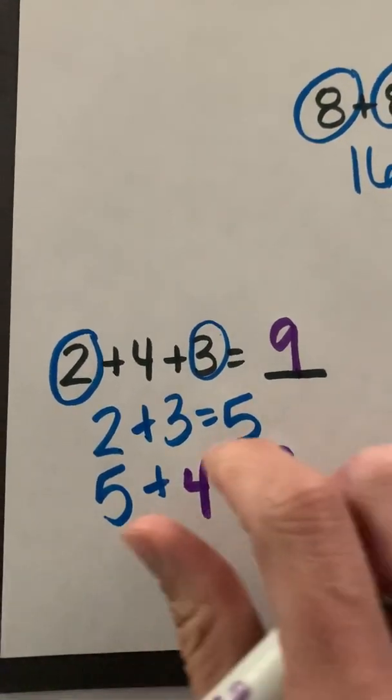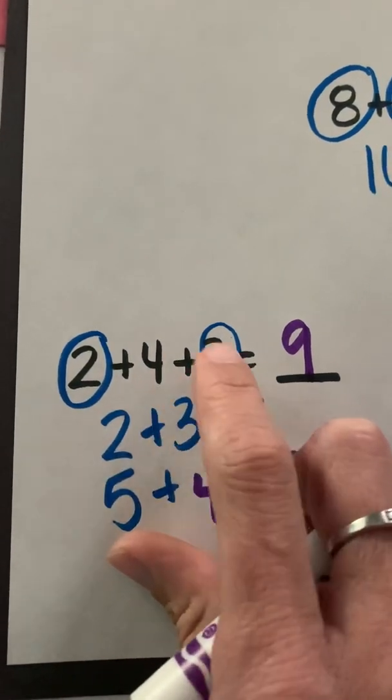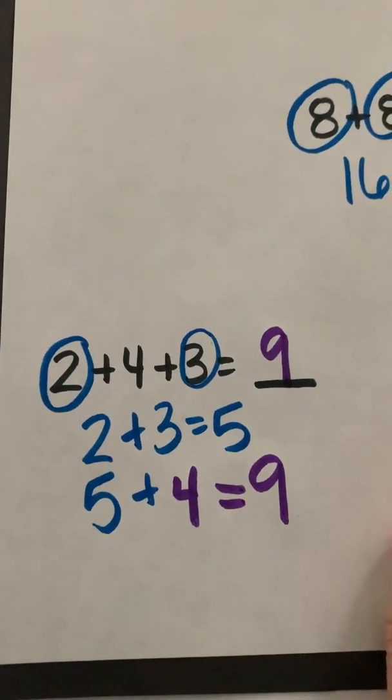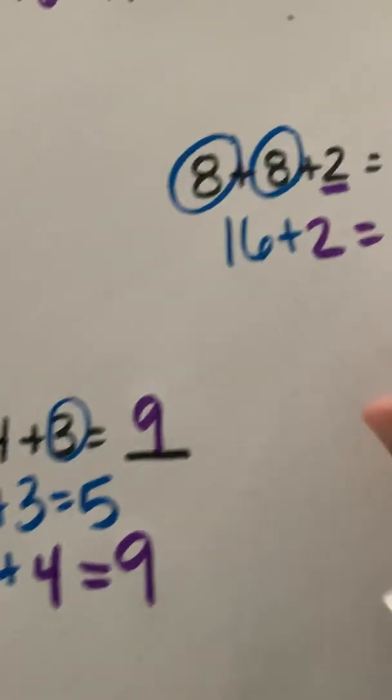Some of you may have thought, well hey, I know that 4 and 2 is 6, and then I want to add on my 3, and that's okay too. Once again, when we talk about other combinations, it's about what works easiest for you. Just like here.